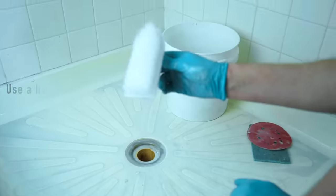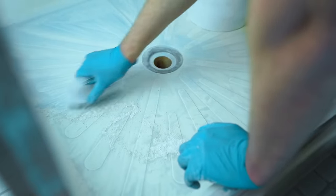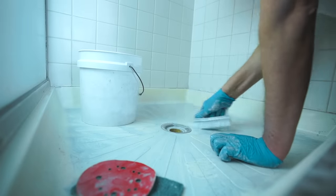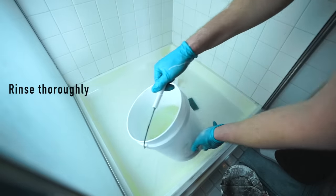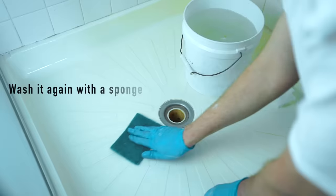Some spots are harder to get dirt out from so use a heavy-duty brush. Rinse thoroughly and wash it again using sponge. Now we prepare the shower base for drying process.